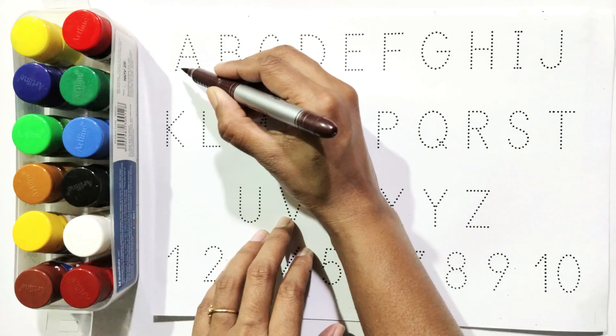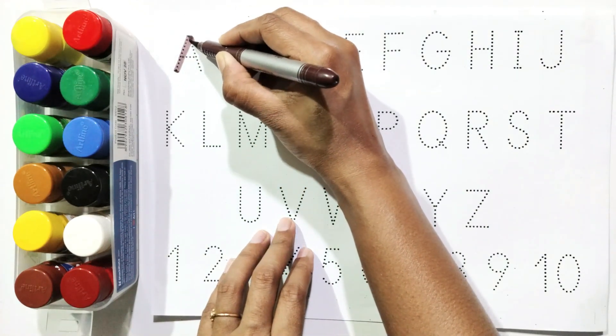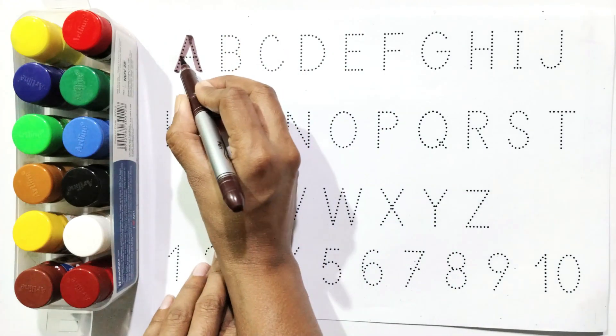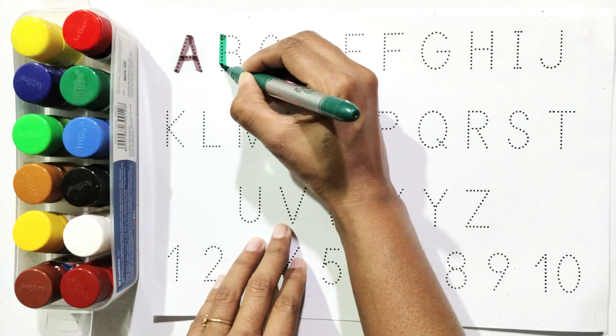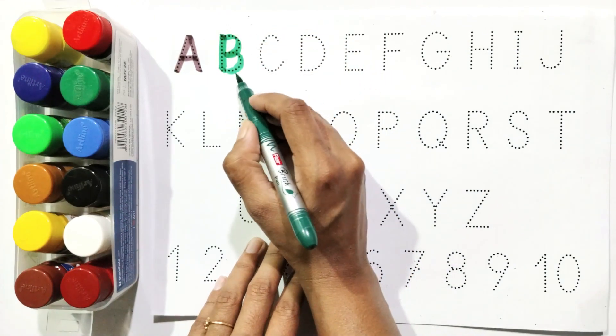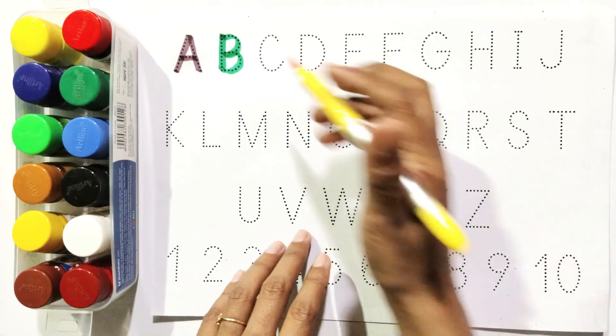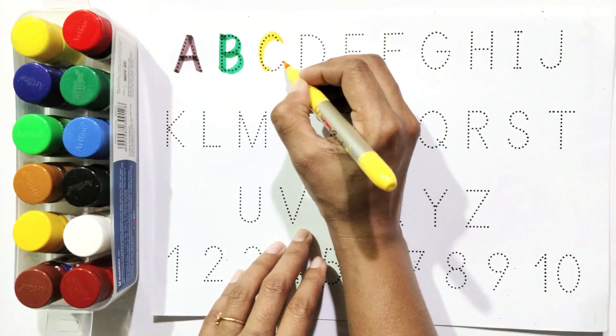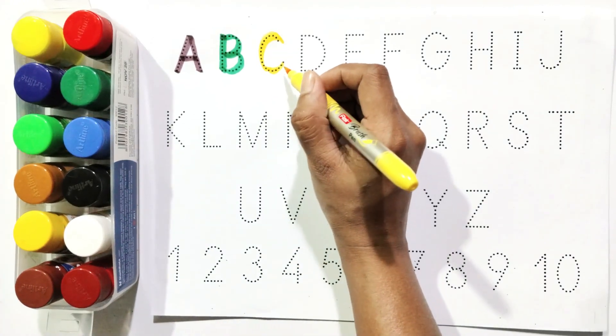Say with me. A is for apple. B is for ball. C is for cow.